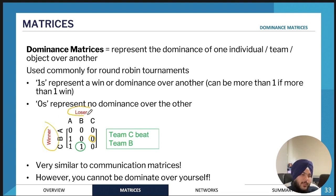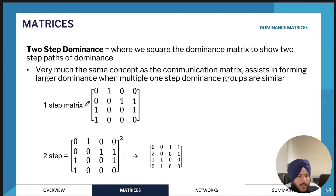We can also have two-step dominances. Two-step dominance is very similar to two-step communication: when one team versus another team who has bet another team. The way you would find the two-step dominance matrix is by squaring the one-step dominance matrix.